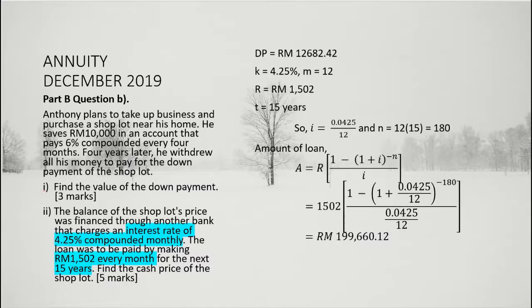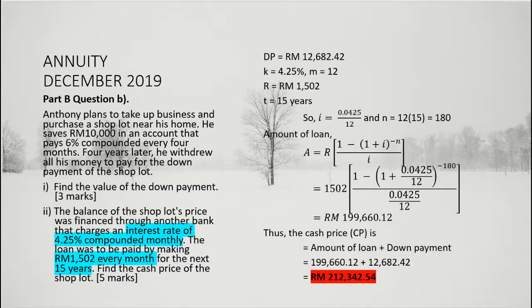Finally, we can find the cash price by adding the amount of loan with the down payment. Adding these values, we obtain the cash price of the shop lot to be RM 212,342.54.